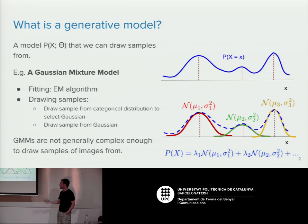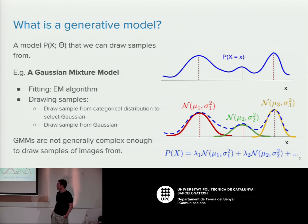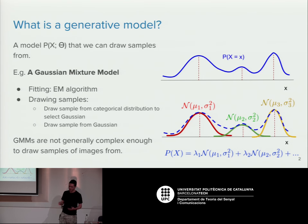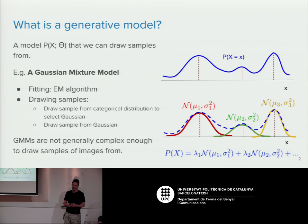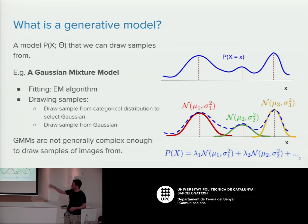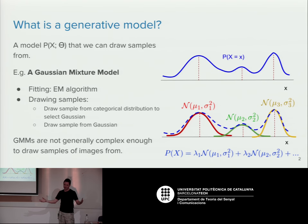Gaussian mixture models are used for anomaly detection and various other applications, and you can fit them quite easily using expectation maximization. But the problem with these simple mixture models is that they're generally not complicated enough to model the kinds of things we care about in image, video, and audio analysis, because these generally aren't easy to model with mixtures of Gaussians unless you have a huge number of them, which makes the parameters infeasible to fit.